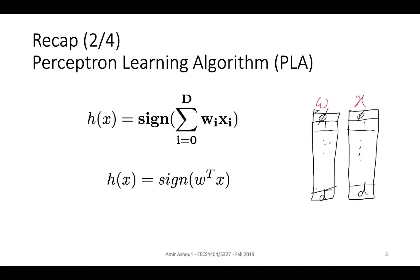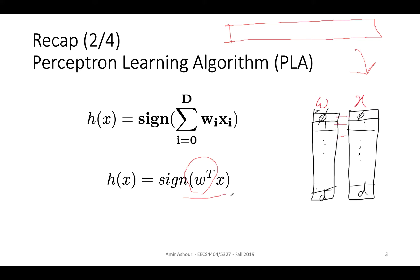In vector space, the feature vector of the application is represented vertically. We transpose the vectors to compute an inner product. We also talked about removing the threshold and embedding it into the summation itself — X_1 and W_1 was the artificial coordinate added and embedded. These two refer to the first iteration, and the rest go up to D-dimensional depending on the features you have. That was a recap of the previous lecture.